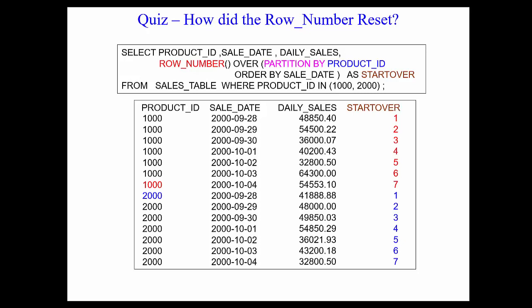So now: one, two, three, four, five, six, seven. Then it encounters a new product ID 2,000, and it starts over: one, two, three, four, five, six, seven. So a PARTITION BY in conjunction with the ORDER BY resets the data. The partition by is part of the sort. We're partitioning by product ID and then ordering by sale date. It's a little like saying order by product ID and sale date, but I also want it partitioned. So that's why we have PARTITION BY product ID, which is really the first sort, and then within that, we ORDER BY sale date. But we reset.